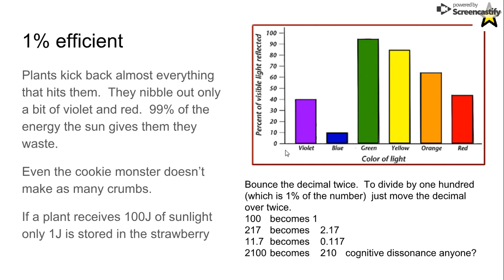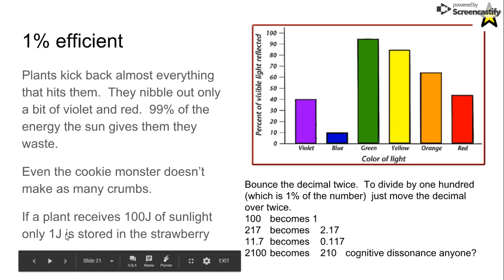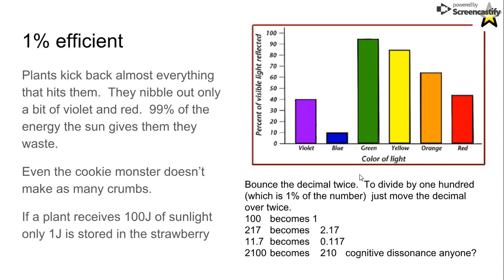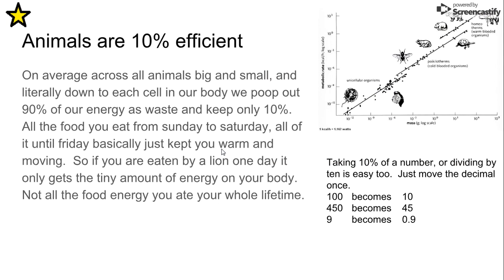This means almost none of the sunlight is actually utilized. Plants only use about one percent — so if plants receive 100 joules from the sun, only 1 joule of strawberry gets made. To calculate one percent, just move the decimal over twice: 100 becomes 1, 217 becomes 2.17, 2100 becomes 21. Animals, on the other hand, are 10% efficient. On average we poop out 90% of our energy and keep only 10% on our bones. All the food you eat from Sunday to Friday is just to keep you warm — if you get eaten by a lion, it only gets the energy on your bones, not all the food you've eaten in your life.